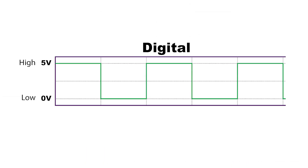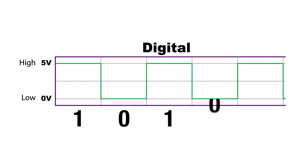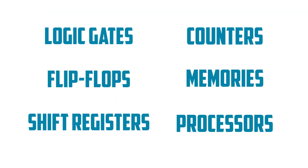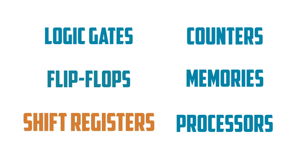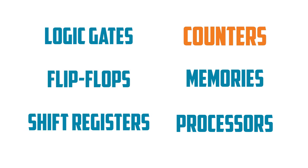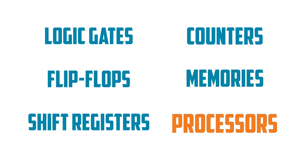Analog circuits are quite useful, but if we want to be able to process or store data, we need digital electronics. Digital circuits operate using only two states — high and low — often represented by one and zero respectively. Digital ICs include logic gates, flip-flops, shift registers, counters, memories, and processors.